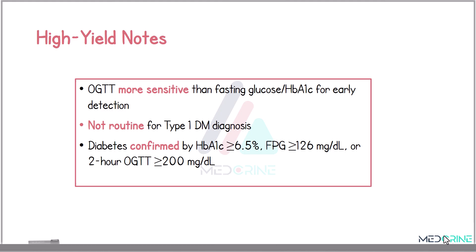Key high-yield notes: oral glucose tolerance testing is more sensitive than fasting blood glucose or HbA1c for early detection of diabetes mellitus. It is not a routine test for type 1 diabetes diagnosis. Diabetes mellitus is confirmed by an HbA1c of greater than or equal to 6.5%, a fasting blood glucose of greater than or equal to 126 mg/dL, or a 2-hour glucose tolerance test result of greater than or equal to 200 mg/dL.